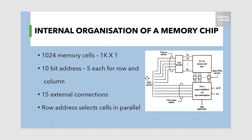Alternatively, the same number of cells can be organized into a 1K×1 format. In this case, a 10-bit address is needed but there is only one data line, resulting in a total of 15 external connections. In such an organization, the required 10-bit address is divided into two groups of five bits each to form the row address and the column address of the cell array.